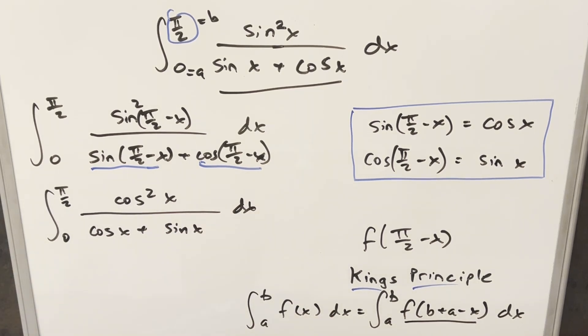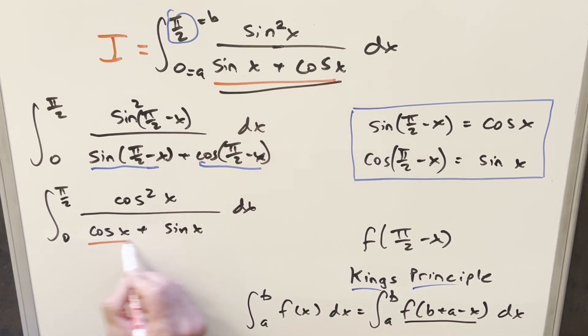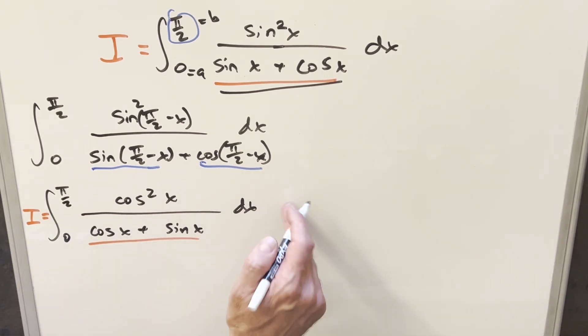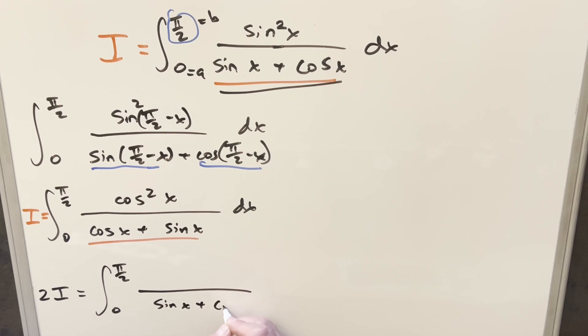And now at this point, this is when the King's Principle really pays off because you notice we've got the same bounds as we have in our original problem, which I'll label as I. But we also have the same denominator, the order changed, but it's still the same thing. So it's going to make it nice to add these two together, because this here is also I. So what I'll do now is just add these two integrals together, and I'll bring them together into one integral. And with the same denominator, we already have a common denominator. So what's going to happen is, we'll write this 0 to π/2, same denominator sinx plus cosx, add the numerators together. So we end up with sin²x plus cos²x.